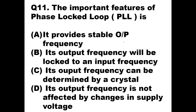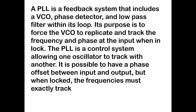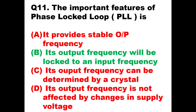Question number eleven: what is the important feature of phase locked loop PLL? Option B is the answer: its output frequency will be locked to an input frequency. A PLL is a feedback system that includes a voltage controlled oscillator, phase detector, and low-pass filter within its loop. Its purpose is to force the VCO to replicate and track the frequency and phase at the input when in lock.